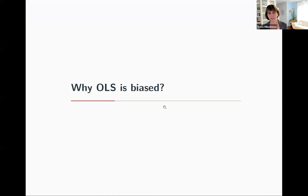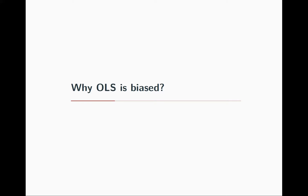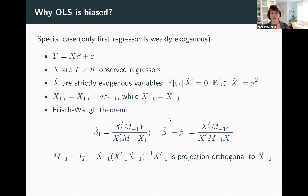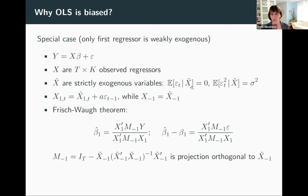I wonder if there is a question, because I'm ready to go into the big question: why is all this biased? No questions so far? Good. So why is OLS biased? I will try to talk about a simpler case. Imagine this OLS regression where y is the outcome for a time series, x is the regressor, T is the number of observations, and K is the number of regressors.